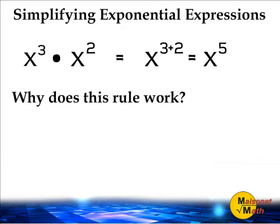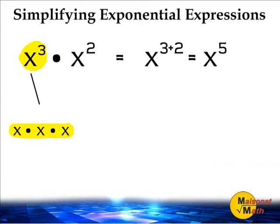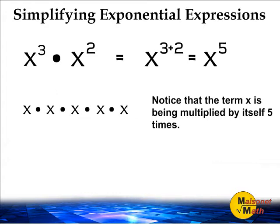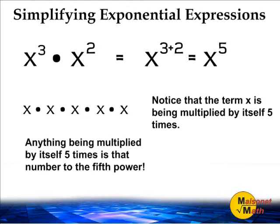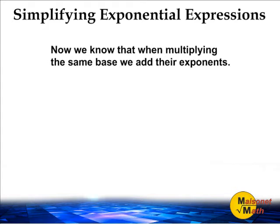Why does this rule work? Writing the original expression in expanded form reveals why you add the exponents when multiplying bases that are the same. By rewriting x to the third power and x to the second power in expanded form, we can clearly see that we have five x's being multiplied together. We may simplify this expanded expression as x to the fifth power. So remember, when multiplying the same base together, we simply add their exponents together.